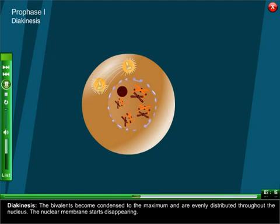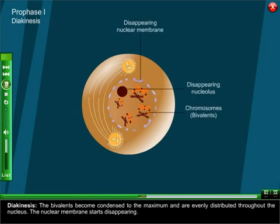Diakinesis: The bivalents become condensed to the maximum and are evenly distributed throughout the nucleus. The nuclear membrane starts disappearing.